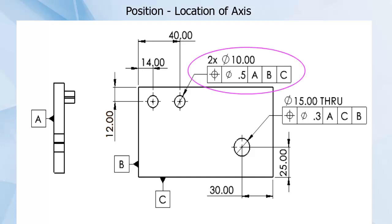Our position callouts say that when we hold this part by datum feature A, the back of the part, and then B, the side of the part, and then C, the bottom edge, the two pins need to be positioned so that their actual axis falls inside a 0.5 mm wide tolerance zone that is located 12 mm from the top edge and 14 and 40 mm from the left edge.